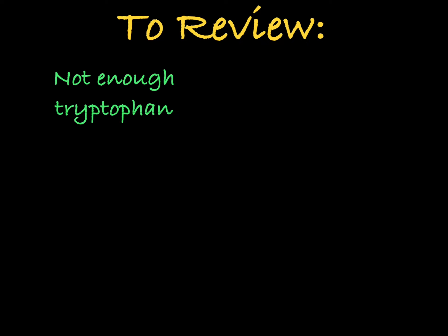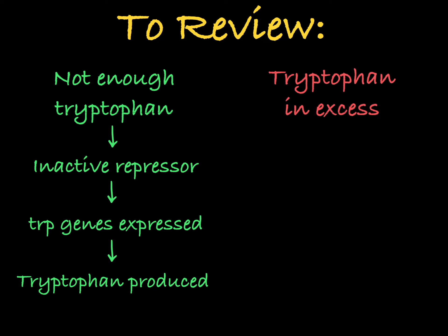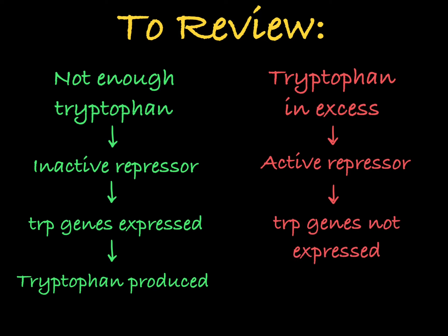So that's the trp operon. When tryptophan is lacking in the cell, the repressor is inactive and the genes are able to be transcribed and translated, resulting in tryptophan production. When tryptophan is abundant in the cell, it activates the repressor, which then limits transcription of the trp structural genes, preventing the production of additional tryptophan.